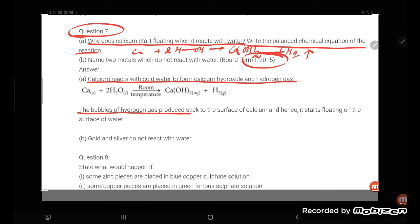The bubbles of hydrogen gas produced stick to the surface of the calcium, and hence it starts floating on the surface of water. So that is what happens - it evolves bubbles which stick on the surface of the metal, and as a result it will start floating.